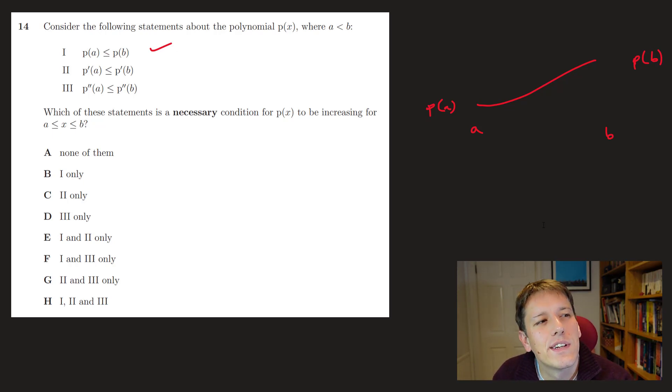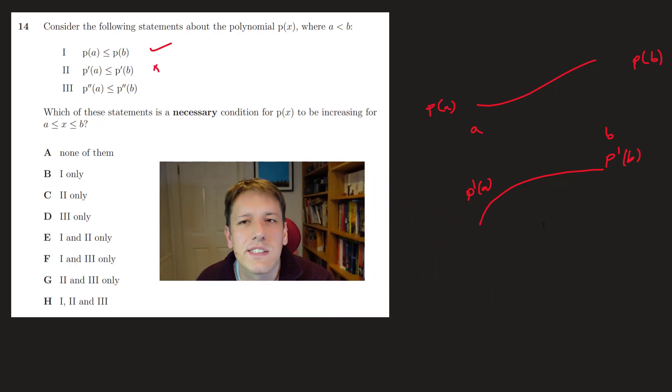But do we have to have that the gradient at A is less than the gradient at B? Well, don't think it's too hard to come up with examples where that's not the case. I mean, you could just imagine any polynomial that does something like this, it's still an increasing function, but here P prime of A is larger, the gradient here is a larger positive number than it would be here, so you can pretty confidently say that one's not true, and you've got to make sure you can do it with a polynomial, obviously, but this could easily just be a part of a quadratic function or something.